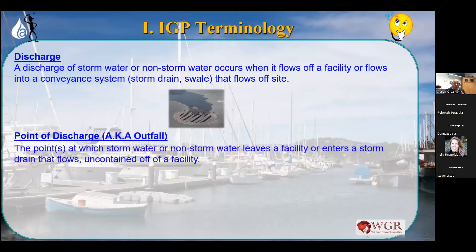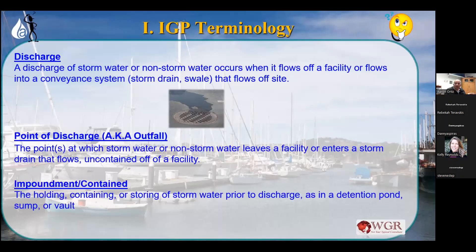Discharge is stormwater or non-stormwater that occurs when it flows off the facility or flows into a drainage system that flows off-site. If water leaves your property — either from a point of discharge, an outfall, or whatever — that's a discharge. I use the term outfall interchangeably with point of discharge. Technically outfall goes to the ocean, but I use it for individual facilities as well. So discharge is water or fluid leaving your property, whether through a drain, out a gate, or out a fence.